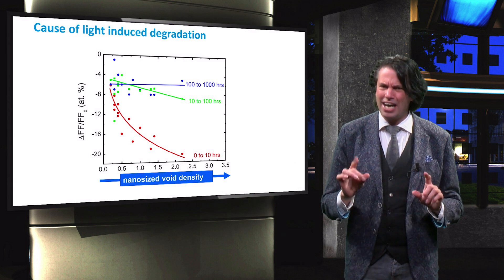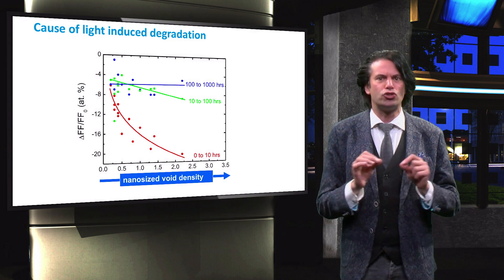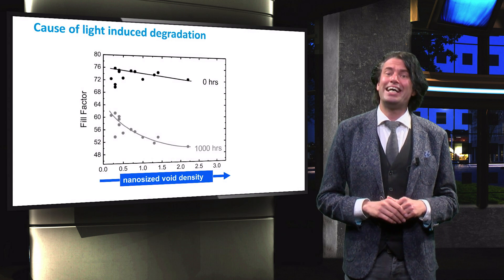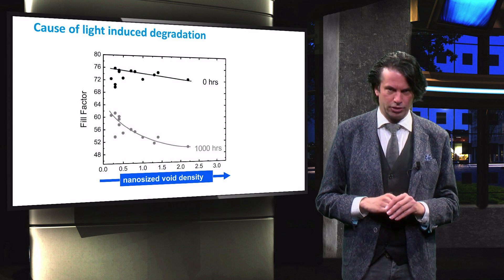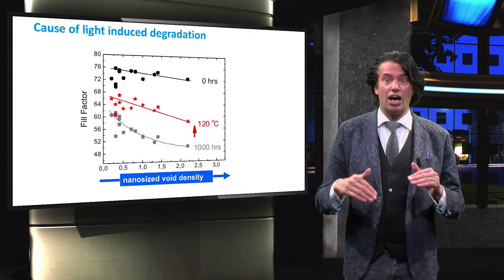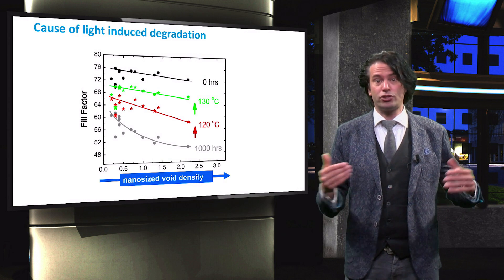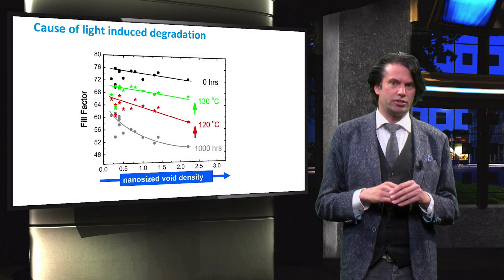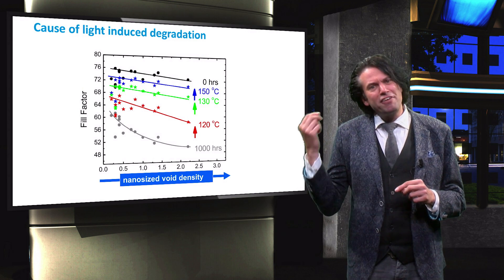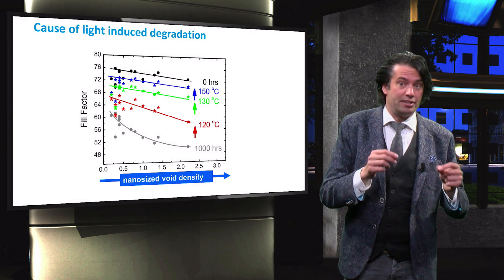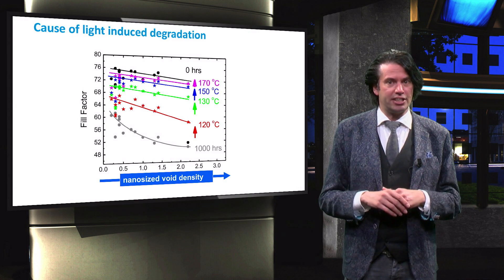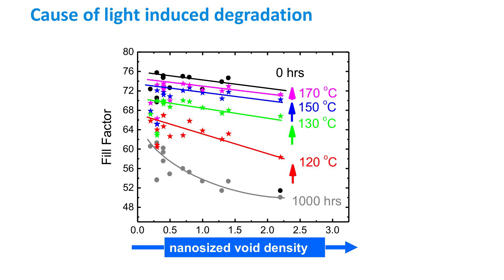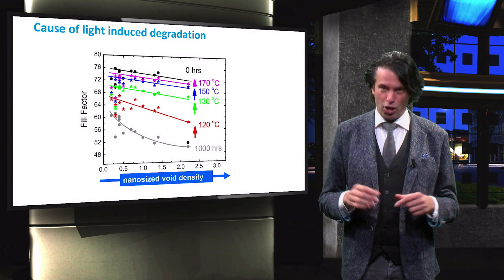This shows that the fast light induced defects are most likely created at the surface of the nanosite voids. Now we thermally anneal the solar cells for 30 minutes in the dark. First we anneal at a relatively low temperature of 120 degrees Celsius — the recovery of the fill factor is larger for solar cells made of void-rich amorphous silicon. At 130, 150, and 170 degrees Celsius the fill factor recovers with small steps. It requires annealing temperatures of 180 degrees Celsius to almost fully recover the fill factor. This shows that relatively low annealing temperatures eliminate the fast light induced defects, whereas high temperatures are needed to anneal out the slow defects.